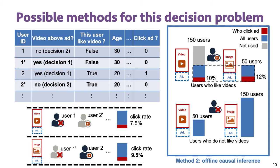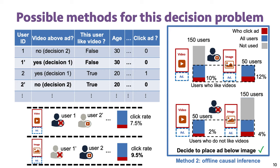We see that by this paired comparison, placing the ads below images results in a higher click rate for both types of users, which is also the better decision according to the ground truth. In this example, we make the right decision. But due to the finite sample of data, it is possible that the estimate changes, and in that case we will make the wrong decision.